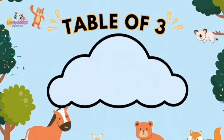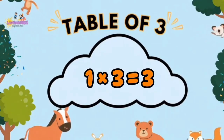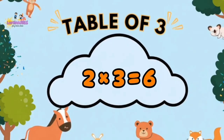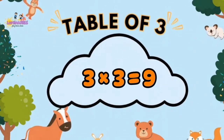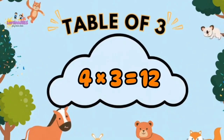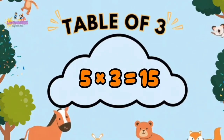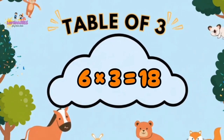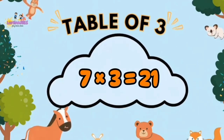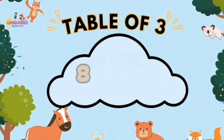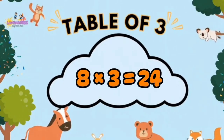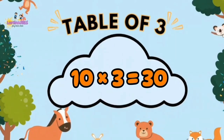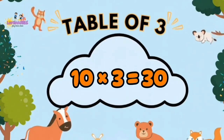Table of 3. 1 x 3 is 3. 2 x 3 is 6. 3 x 3 is 9. 4 x 3 is 12. 5 x 3 is 15. 6 x 3 is 18. 7 x 3 is 21. 8 x 3 is 24. 9 x 3 is 27. 10 x 3 is 30.